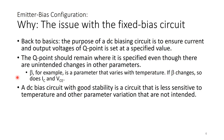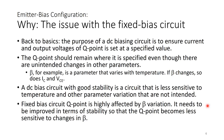A DC bias circuit with good stability is one that is less sensitive to temperature and other unintended parameter variations. The fixed bias circuit Q-point studied in the previous video is highly affected by beta variation — even though it does amplify. It needs to be improved in terms of stability so that the Q-point becomes less sensitive to changes in beta.